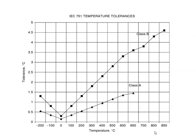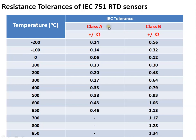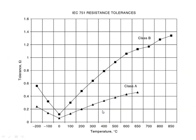Here you can see a table for Class A and Class B showing temperature versus temperature tolerance. With increase of temperature the error also increases. This graph shows temperature versus tolerance for Class A and Class B — for applications requiring good accuracy you can go for Class A, but the temperature range is limited. For higher ranges you can go for Class B, but accuracy is lower. This table and graph show the resistance tolerances versus temperature for Class A and Class B — Class B resistance tolerance increases with increase of temperature.